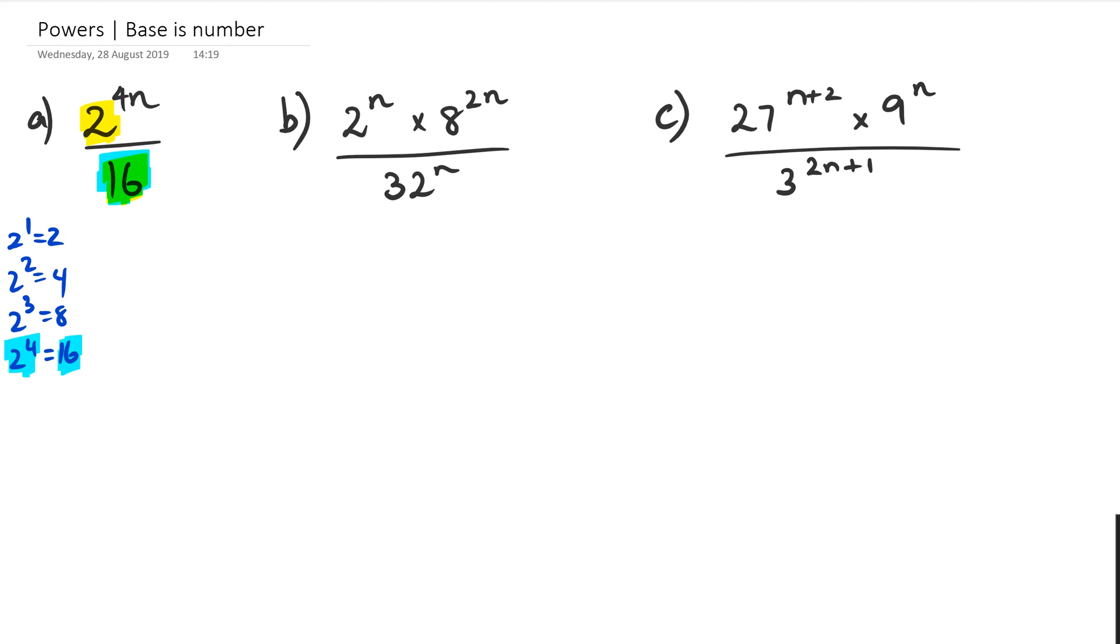So when I actually do that, what I'm going to get is in the numerator, I'm still going to have 2 to the power of 4n divided by, and instead of 16, now I'm going to have 2 to the power of 4. And the law of indices, when you divide with two numbers which have the same base, you actually subtract the powers. So this question will end up looking like this.